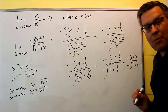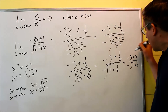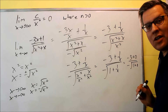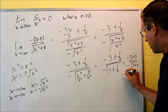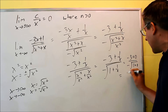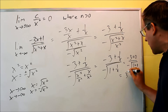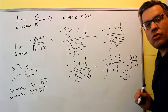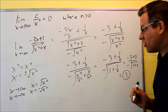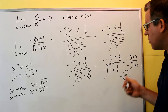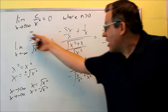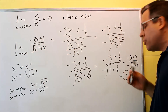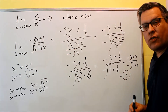That's going to leave me with negative 3 plus 0 over negative square root of 1 plus 0. What will happen is I get negative 3 on top and negative square root of 1 on the bottom. Dividing that out, I'm going to get positive 3 because the two negatives cancel. So that would be the final answer for this limit — positive 3.